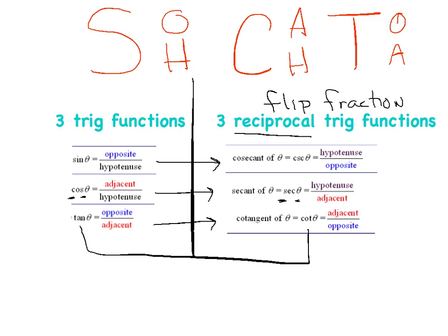Another trick: anything starting with C — cosine, cosecant, cotangent — begins with the prefix 'co'. So if it starts with C, make sure you say 'co' first.